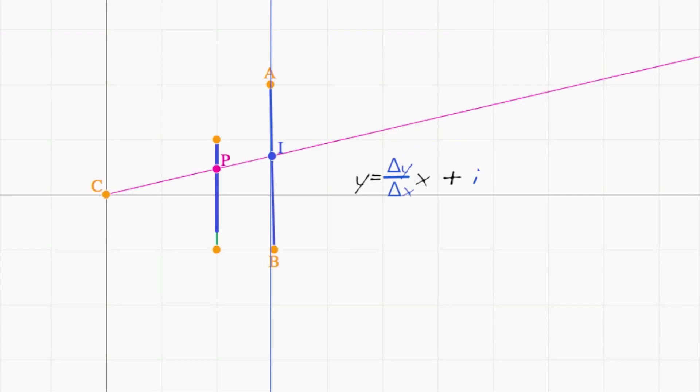But we can eliminate this problem by multiplying through by the change in x. So multiplying through by the change in x, we get change in x times y equals change in y times x, plus i times change in x. It's common to move everything to one side and rewrite this as change in y times x, minus change in x times y, plus i times change of x equals zero.